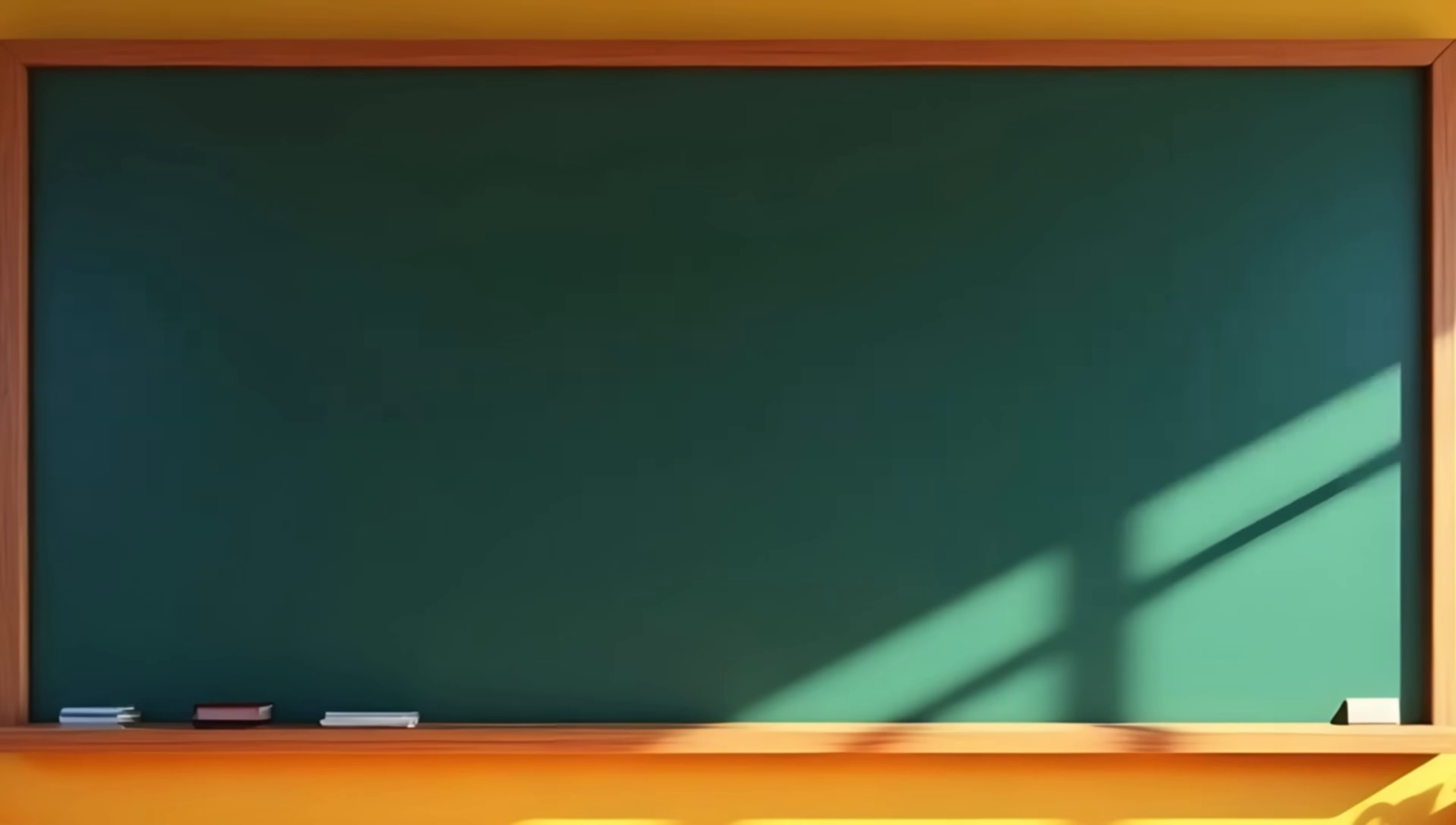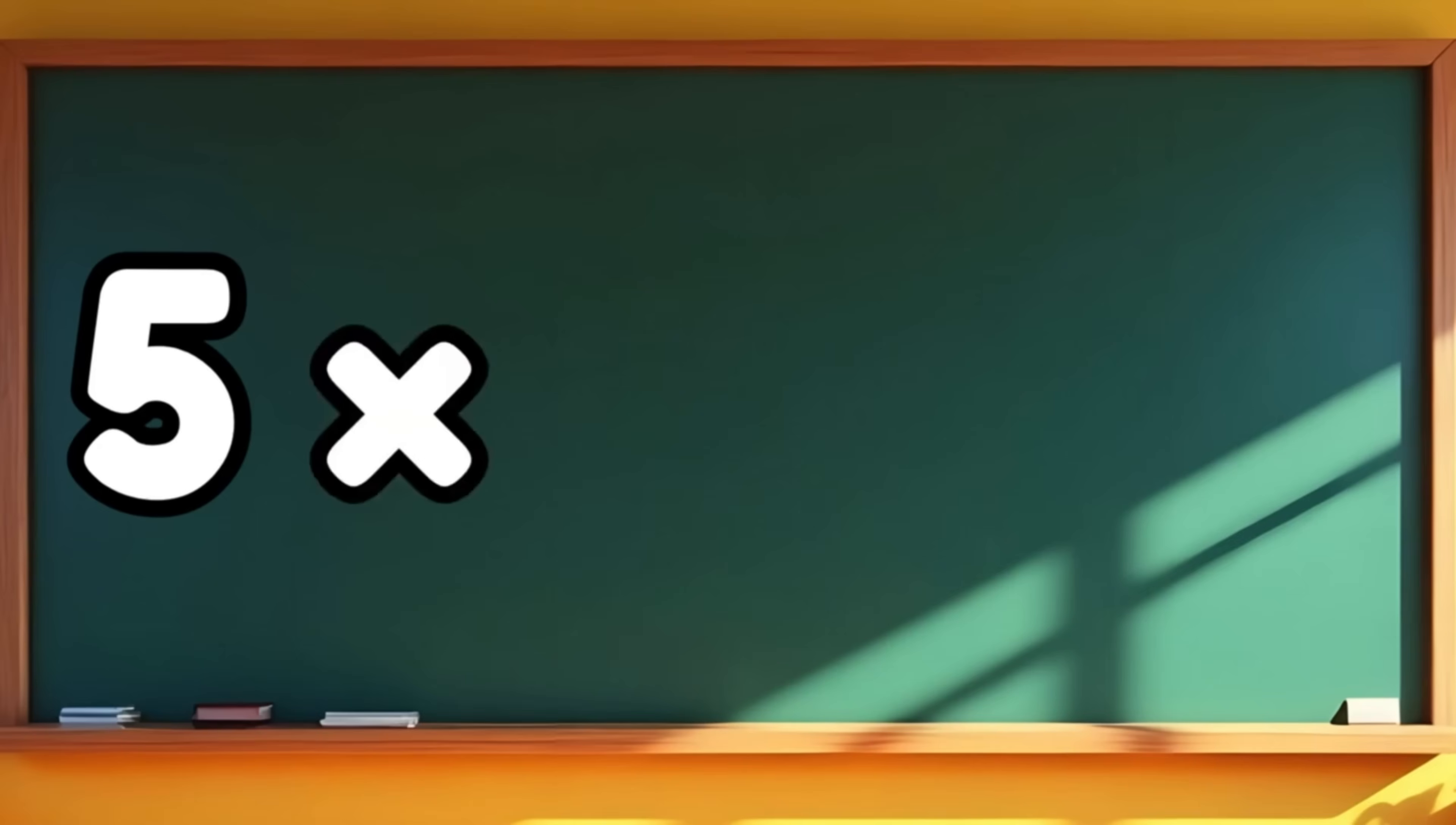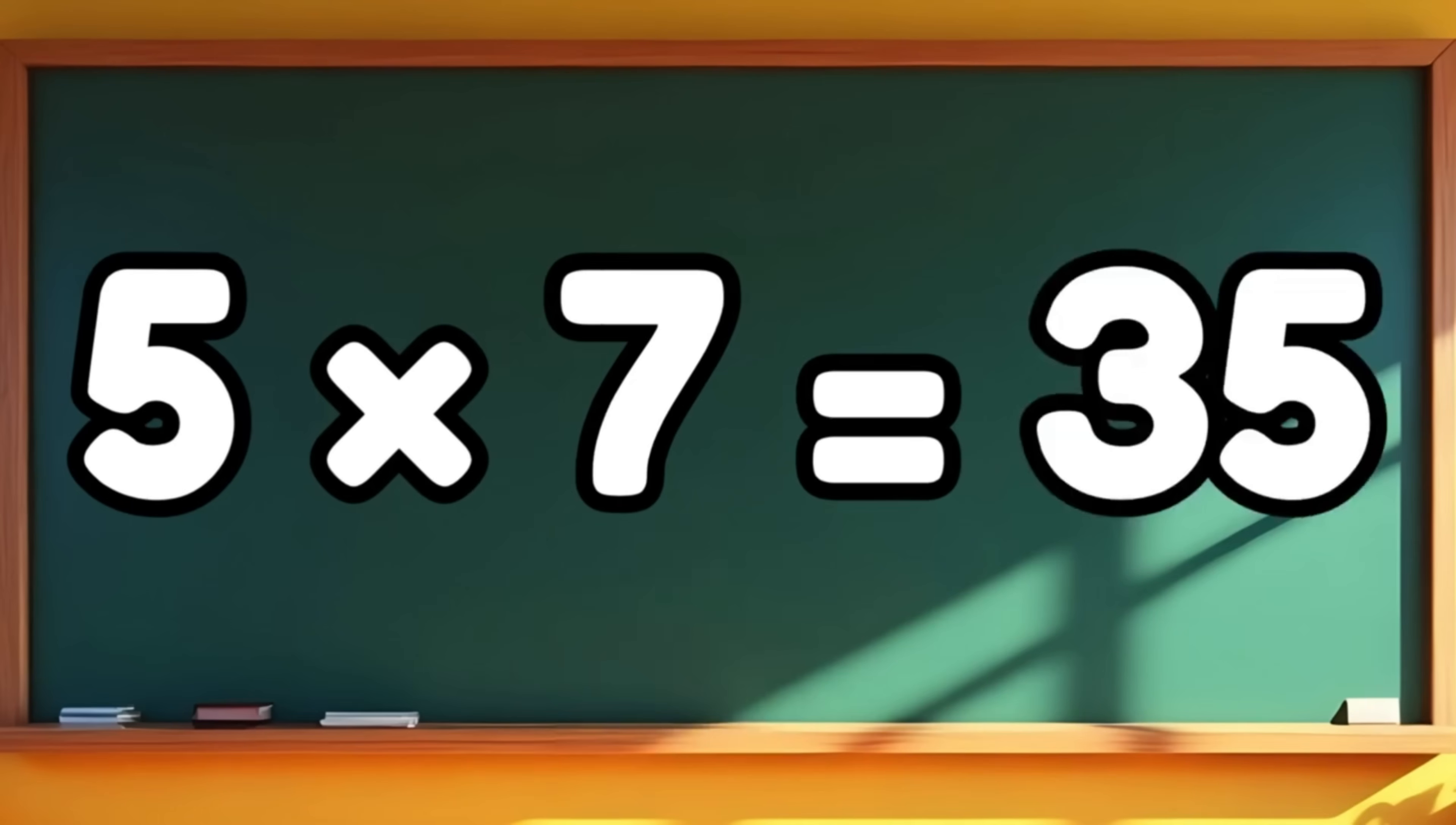Next one. 5 times 7 equals 35. Let's see it again. 5 times 7 equals... It's 35! You are doing great! Good job!